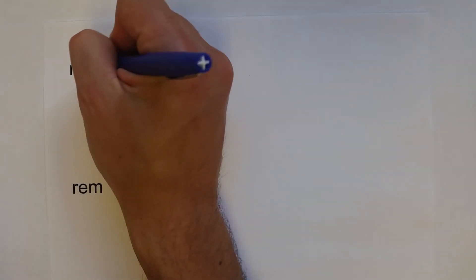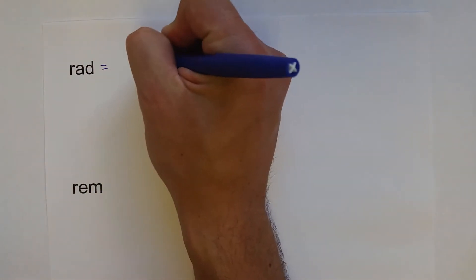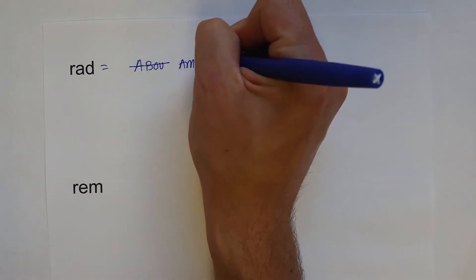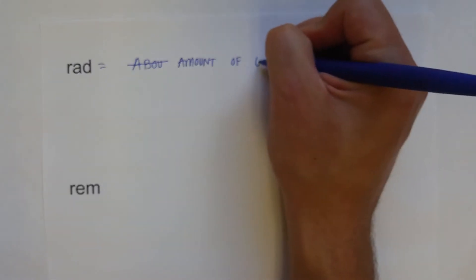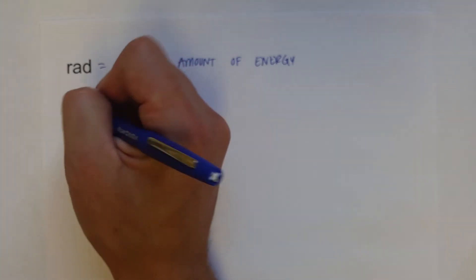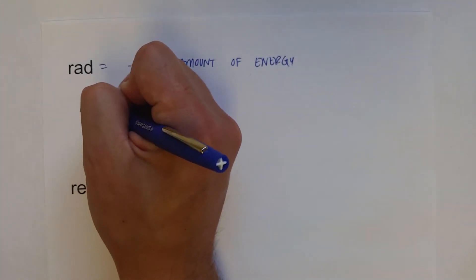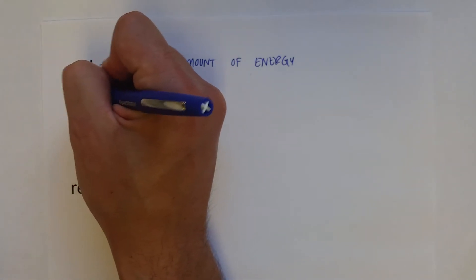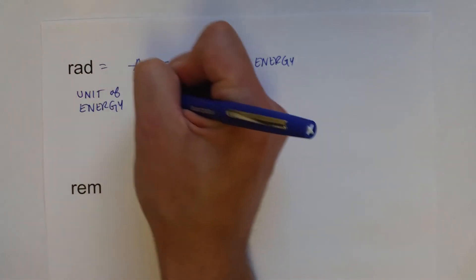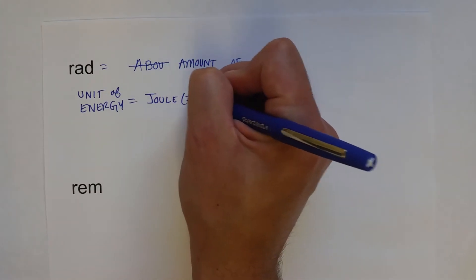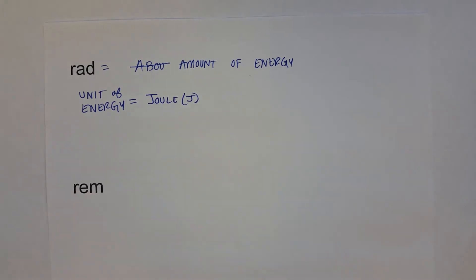And that's used in another type of measurement of radioactivity, the REM. But first let's talk about the rad, which is equal to the amount of energy. And one of the units of energy that we can use is known as the joule. So the joule, J-O-U-L-E, abbreviated J, is the unit of energy.